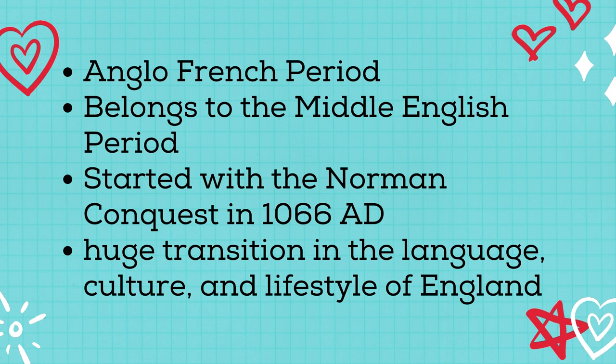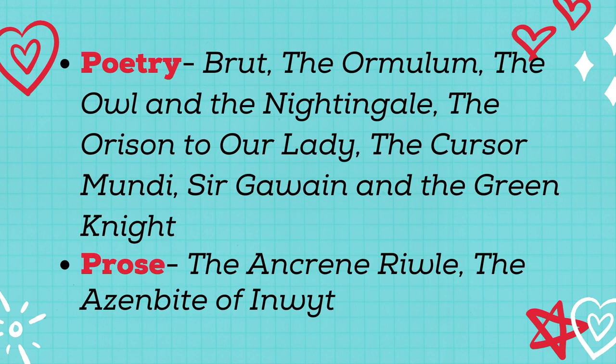It was in this period that there was a huge transition or change in the language, culture, and the lifestyle of England. The famous poems of the Anglo-Norman period are Brut, the Ormulum, The Owl and the Nightingale, The Layamon's Brut, the Cursor Mundi, Sir Gawain and the Green Knight. The prose works of this period are the Ancrene Riwle and the Anecdote of Inuit.